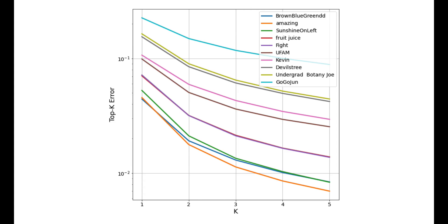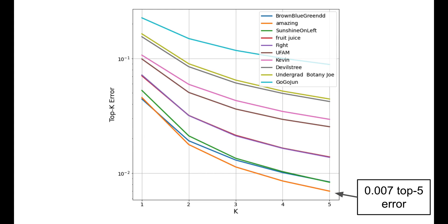Even though the metric was top-one error, we had teams submit their top five predictions for each image so that we can investigate less strict error measures. For 10,000-way classification, we are really impressed with the results. The second place team actually clips the first place team for top-two through top-five error measures, with a very impressive error of just 0.007 for top-five.